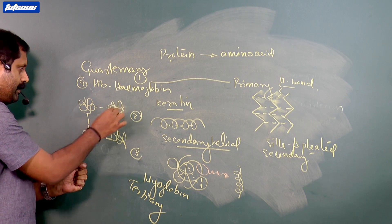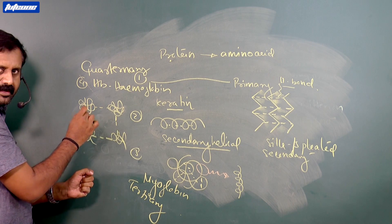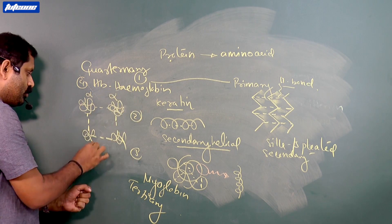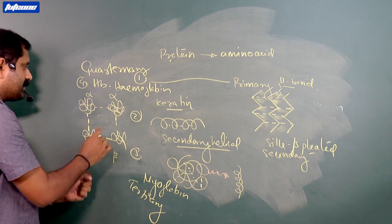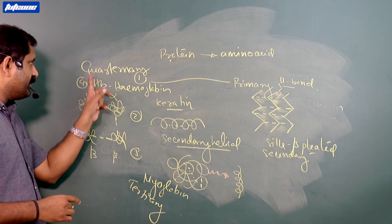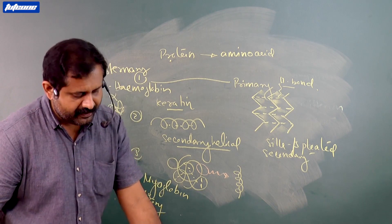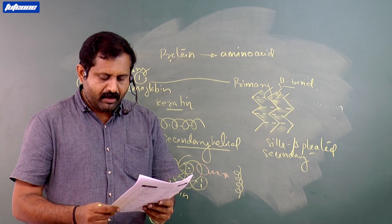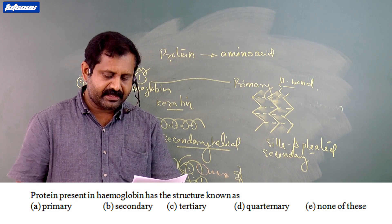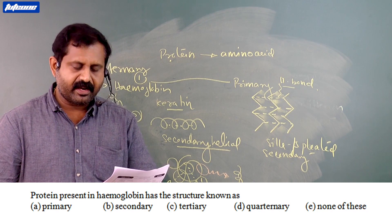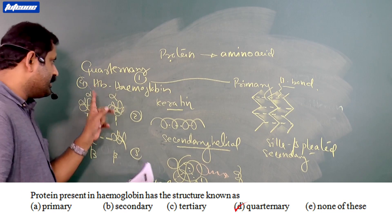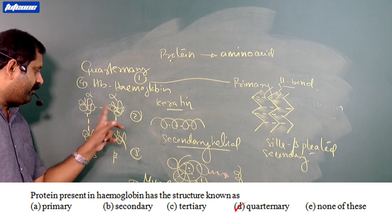Hemoglobin has four polypeptide chains: two are alpha chains and two are beta chains. So one hemoglobin molecule carries two alpha chains and two beta chains, giving it a quaternary structure. The answer to this question is D — quaternary. This is the quaternary structure: two alpha, two beta.